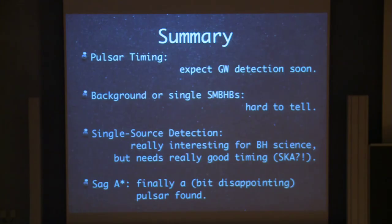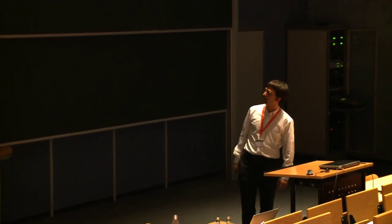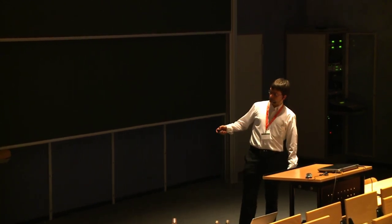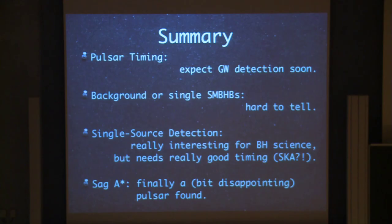I think I did manage to make up some time, partly thanks to the good introduction I got from the previous speaker. So, I'll leave you with this. Pulsar timing, gravitational wave detections should arrive relatively soon if the models that we are aiming for are anything to go by. Whether we'll detect a background or a single source is hard to tell. Both seem pretty likely at this point. If we do detect a single supermassive binary black hole, that would be very interesting for black hole science, but probably we need better precision, better sensitivity, and so we may have to wait for the Square Kilometer Array, which will come up early in the next decade, if we're lucky. And Sagittarius A star: finally a pulsar was found quite close to the central black hole. It might be a bit disappointing to some, but it's still very early days, and we need to be a bit careful in our analysis and see where it really is and what we can really do with it. Thank you very much for your attention.